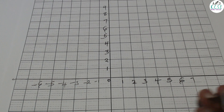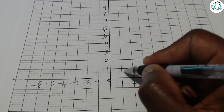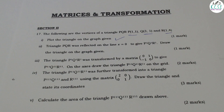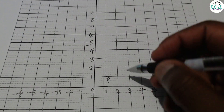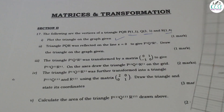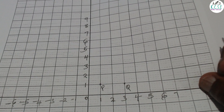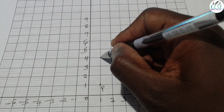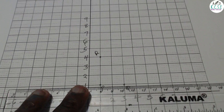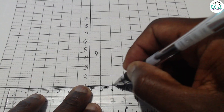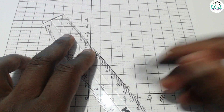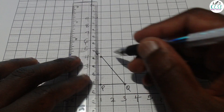P is at (1,1) — so 1,1 is plotted here. Q is at (3,1) — so Q is plotted at 3,1. R is at (1,4) — so R is plotted at 1,4. Join these points to form the triangle.